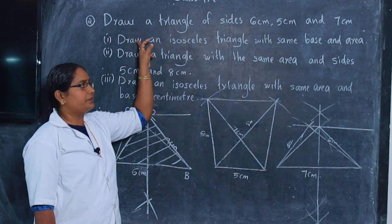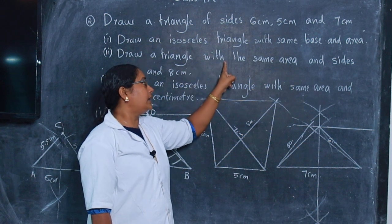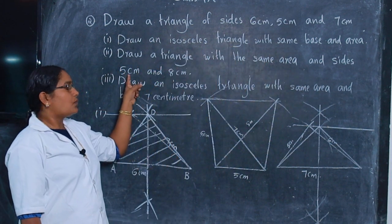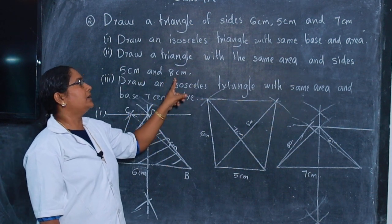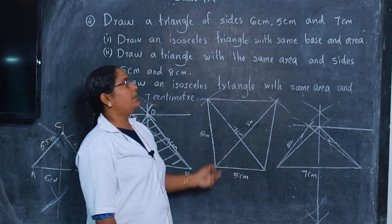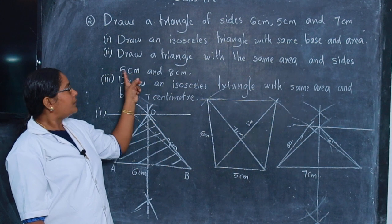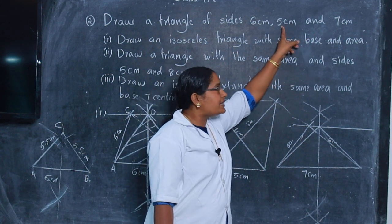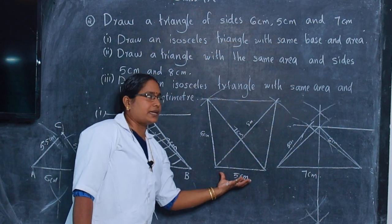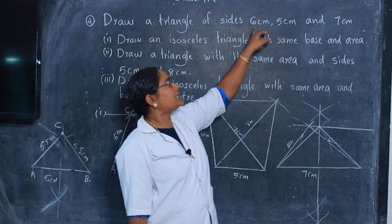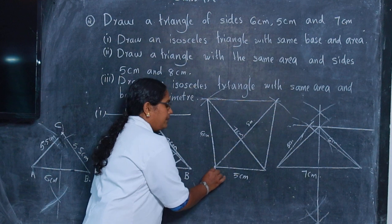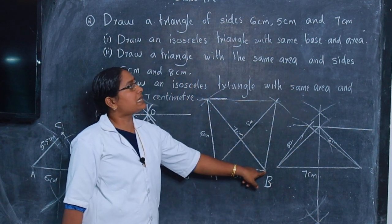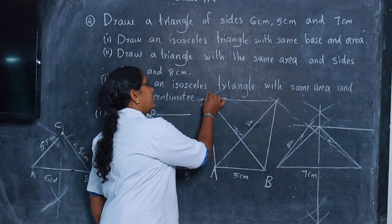First question is over. Second: draw a triangle with the same base, same area, and sides 5 centimeter and 8 centimeter. First draw triangle ABC. In the given triangle, 5 centimeter side is common. Take 5 centimeter as base. Take compass at 6 centimeter, fix at point A, mark an arc. Then fix at B, take 7 centimeter in compass, cut an arc. That point is marked C.